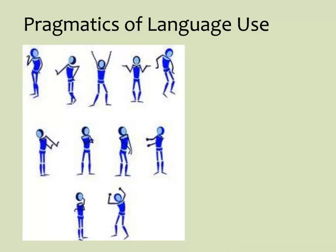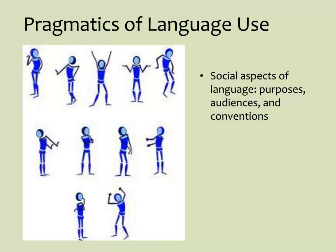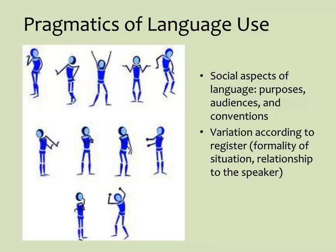Language is more complex than words alone. Pragmatics refers to the rules for social language, which includes using language to accomplish different purposes, adjusting for different audiences, and following the rules for conversation — such as knowing how to repair language misunderstandings or how to use verbal and nonverbal signals. Bilingual students will be familiar with using language for purposes such as asking questions or telling stories, but differences in sentence structures among languages, such as how questions are formed, may hinder communication. We also change how we talk depending on the level of formality and the relationship to the speaker, which is an important aspect of pragmatics.